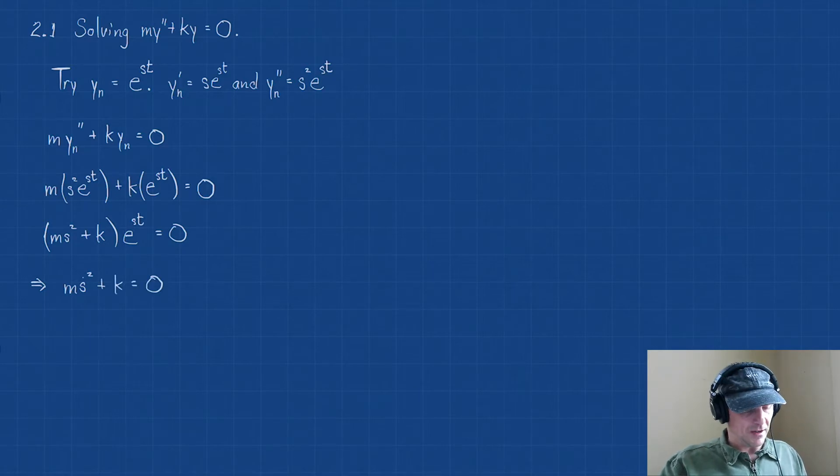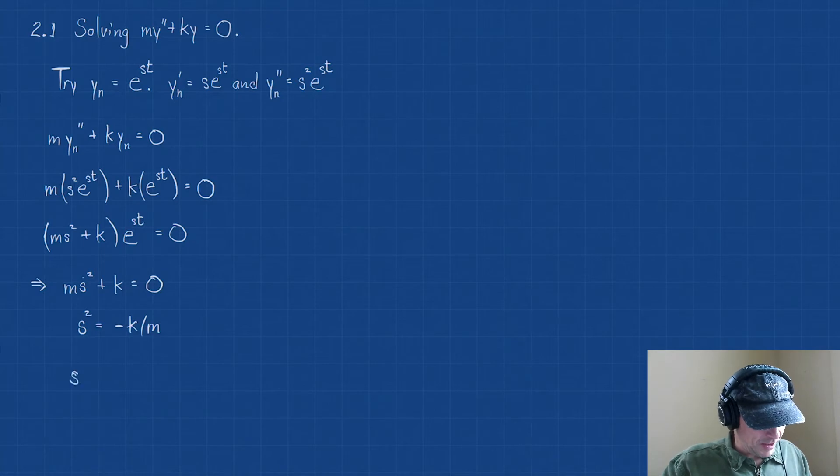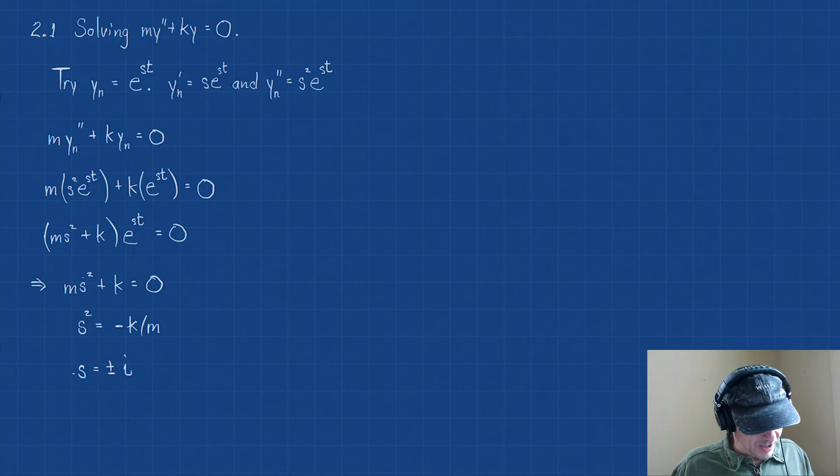Alright, well, we can handle this. Now remember what our goal is to figure out what s is. So I'm going to subtract the k, divide by the m. So I have s² = -k/m. Okay, let's take the square root. This is going to give us something maybe a little unexpected. That is that s = ±√(-k/m), and we're taking the square root of a negative, so that's going to give us s = ±i√(k/m).